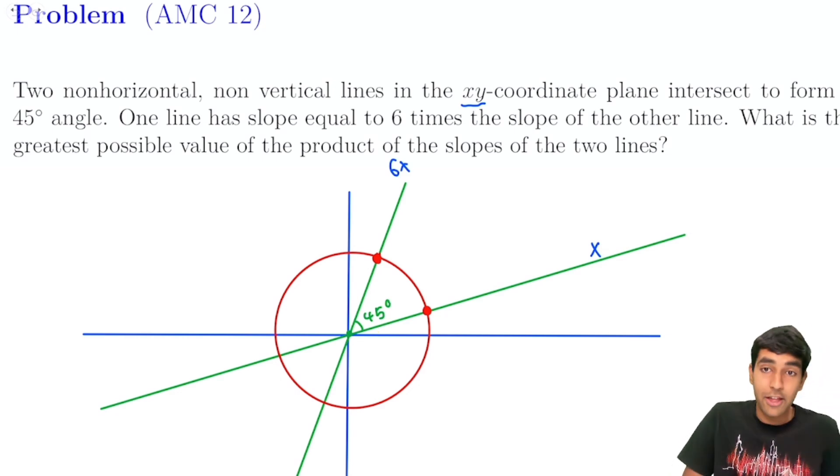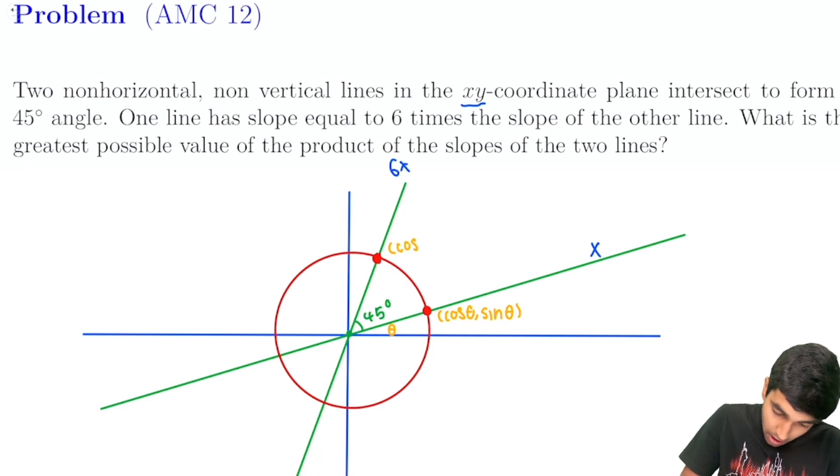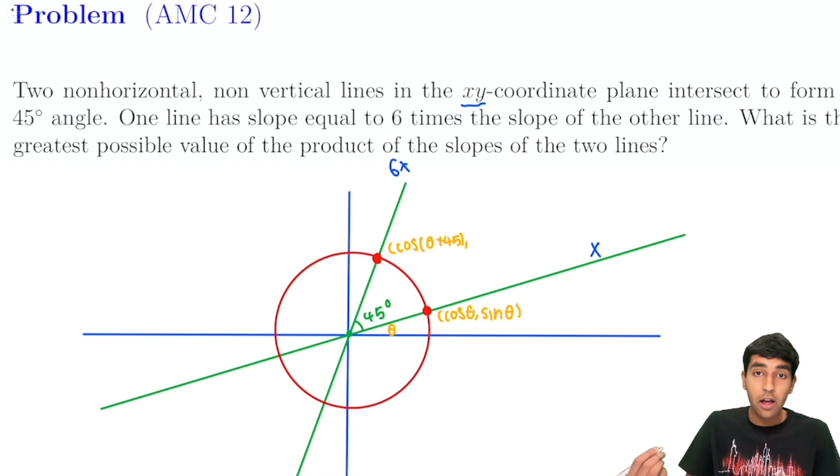Let's say this angle over here is theta. So because it's a unit circle, we would have that the coordinates of this point are going to be cosine of theta, comma, sine of theta. And similarly, we would have the coordinates of this point over here. That's going to be cosine of theta plus 45, comma, sine of theta plus 45.